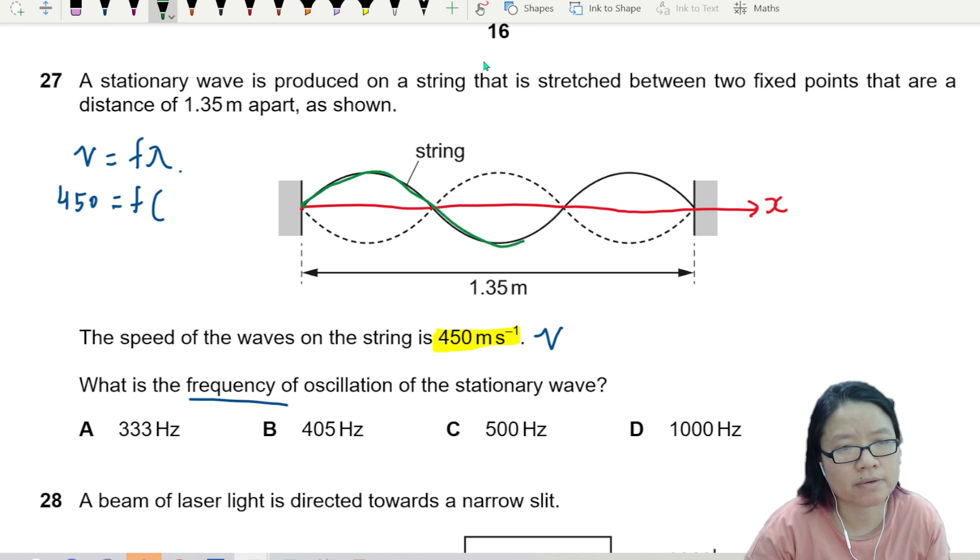Here to here is one wavelength, ding ding, lambda. And here is another half a wavelength, so 1.5 lambda. So here to here is lambda.